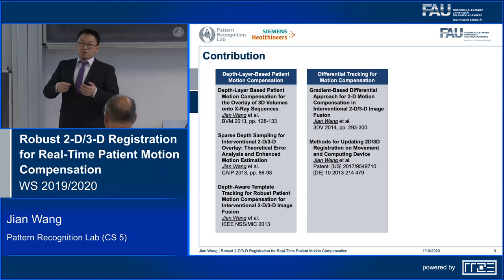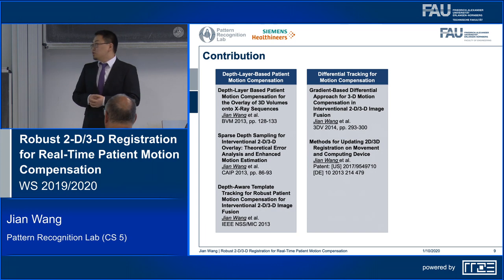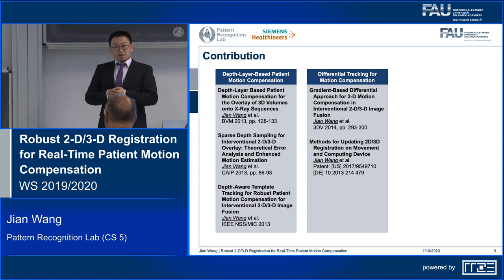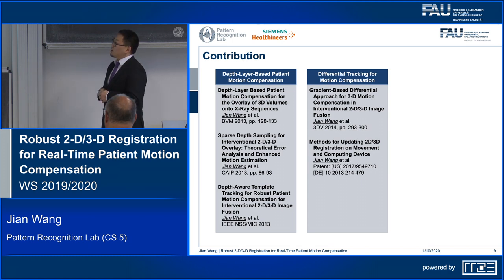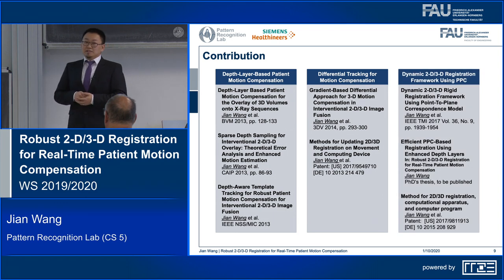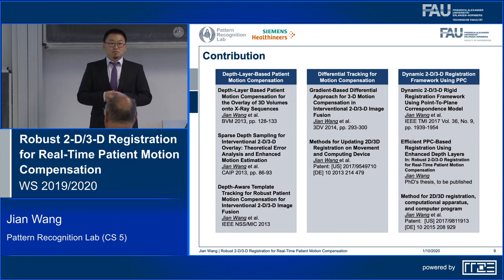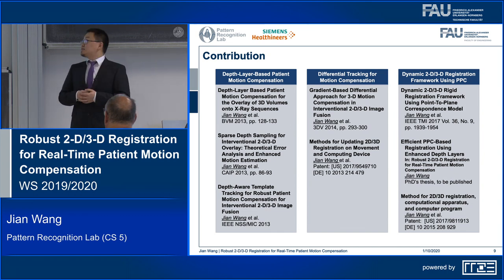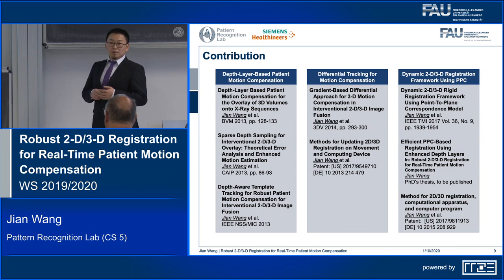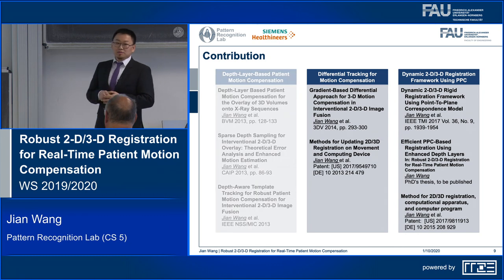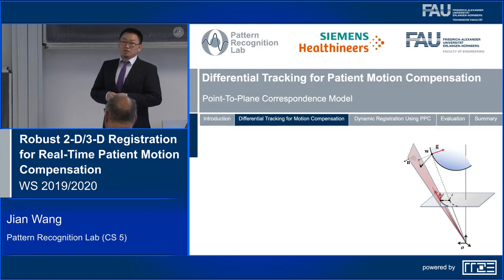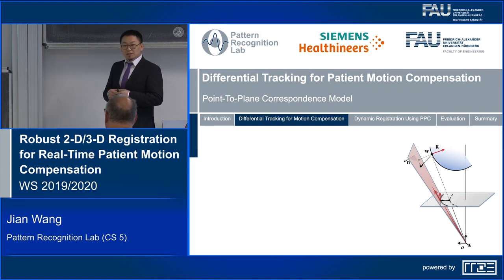I propose a point-to-plane correspondence model for differential motion compensation, where the 3D motion is very efficiently constrained by using 2D tracking. I extended this PPC model as a dynamic 2D-3D registration that allows us to have a very accurate initial registration as well as real-time capable motion compensation. Due to time limits, I'm going to skip the first part and go directly to the differential tracking for motion compensation where the point-to-plane correspondence model is introduced.